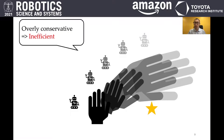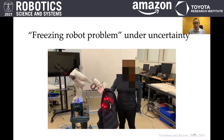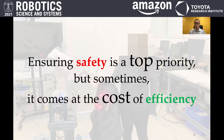However, sometimes this is overly conservative, resulting in inefficient robot motion. In this example, the robot is reasoning about the uncertainty in the human dynamic model and avoiding collisions with the human arm while dressing the human. As a result, the robot freezes in place and cannot make progress. Therefore, ensuring safety is a top priority, but sometimes it comes at the cost of efficiency.